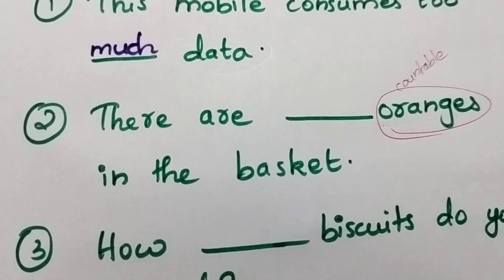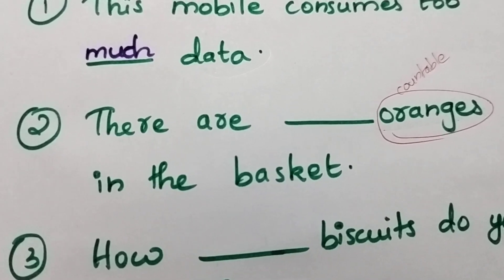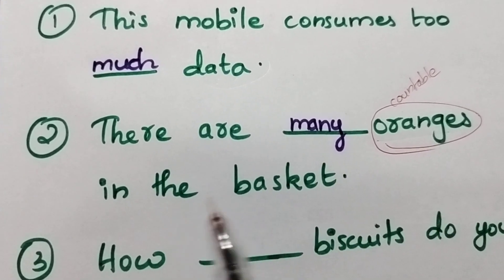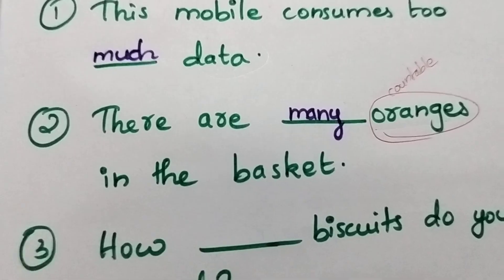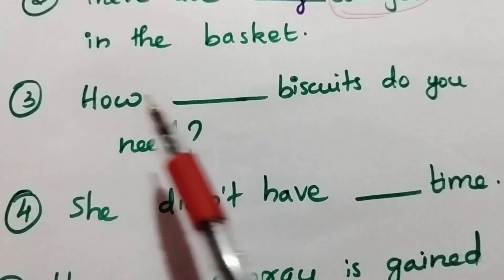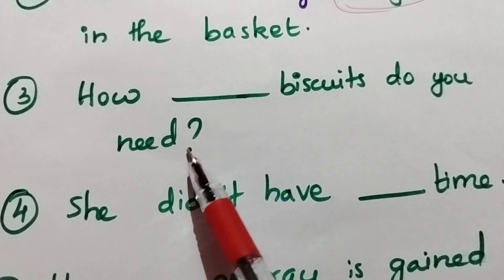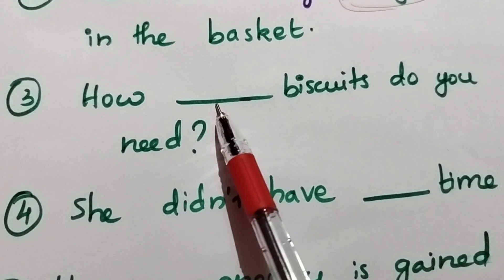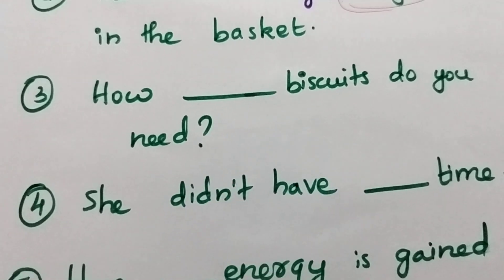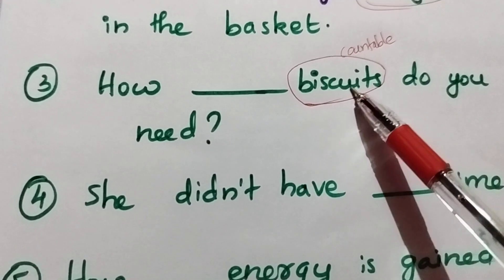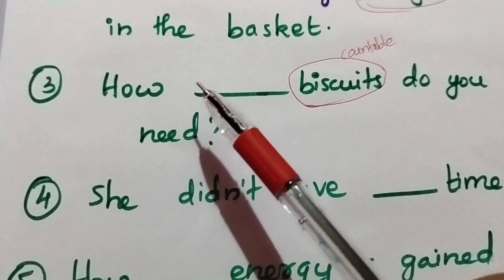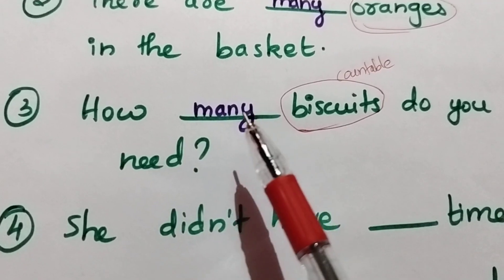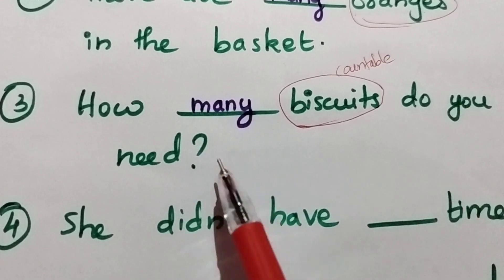Third: 'How ___ biscuits do you need?' Biscuits are countable, so we write 'many': 'How many biscuits do you need?'